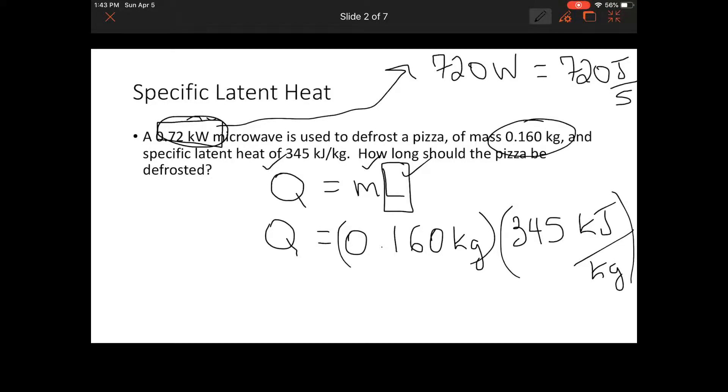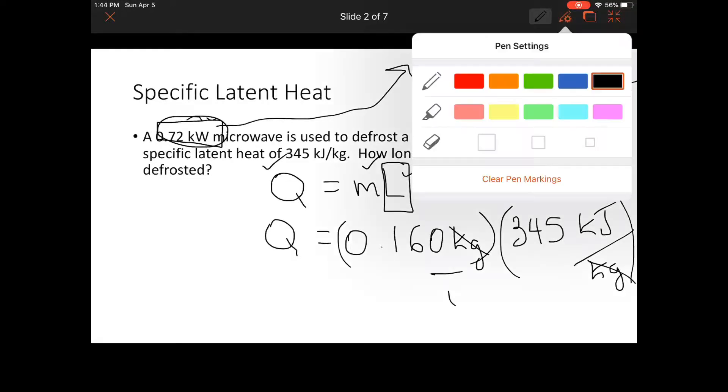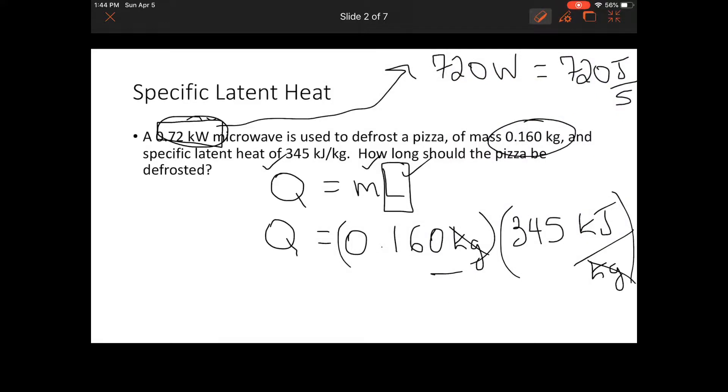That will give us, solving this will give us our total value, and my kilograms cancel out. So I then am left with the amount of energy that this pizza will basically absorb while it is defrosting. Let me punch that into my calculator, and I end up with 55.2, and that is in kilojoules.